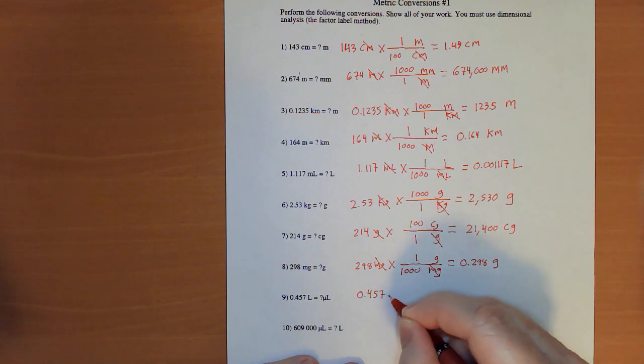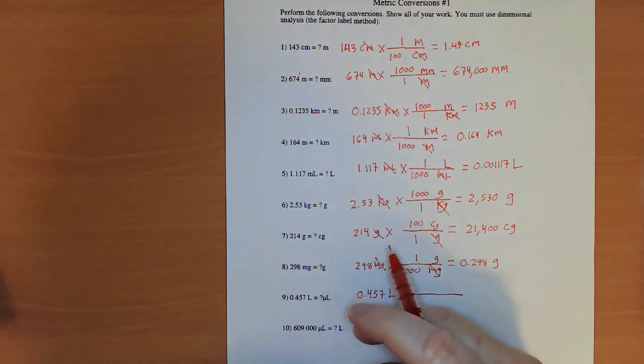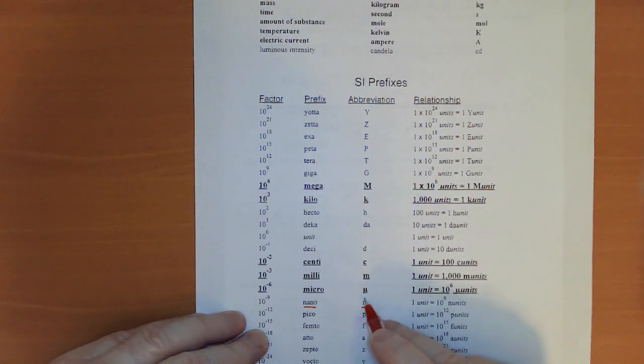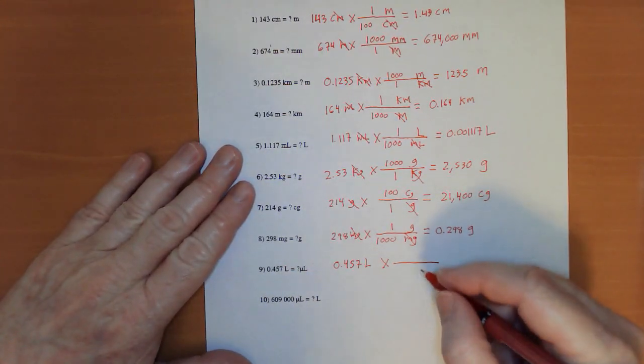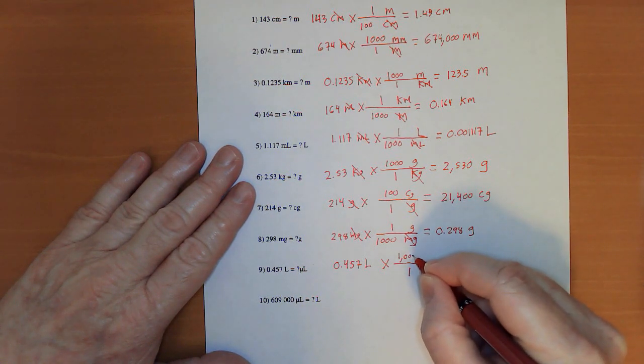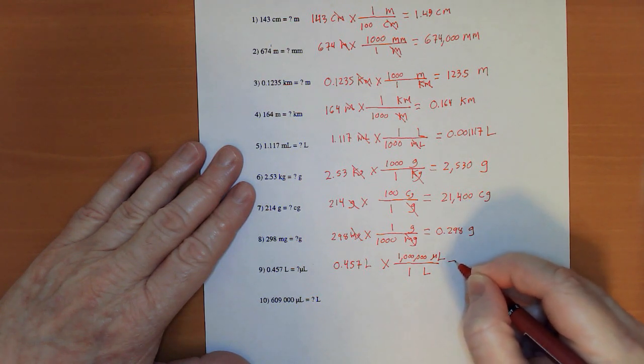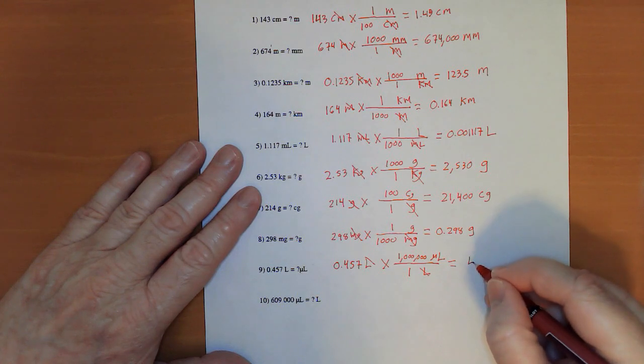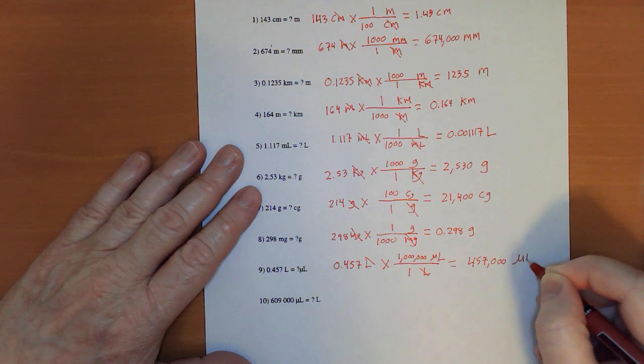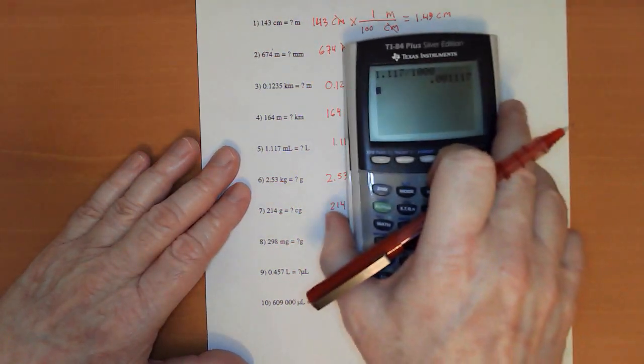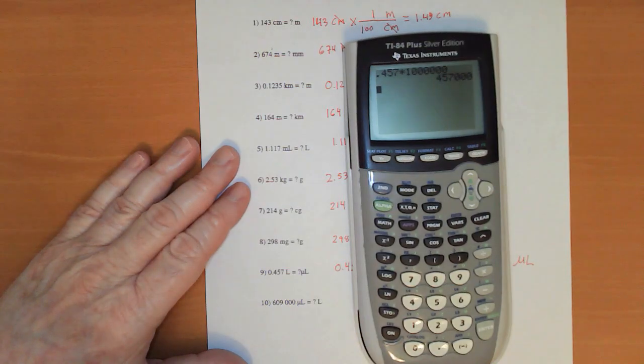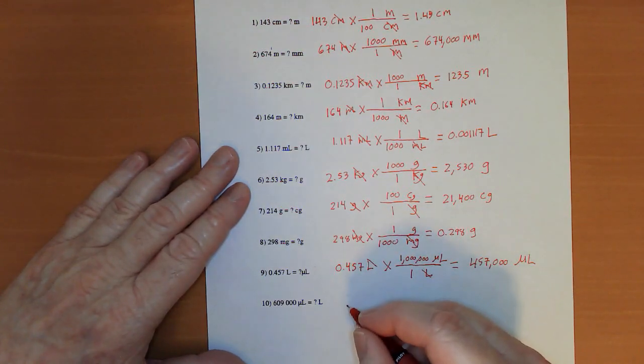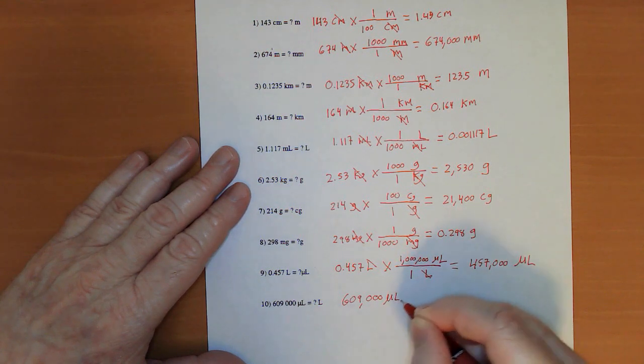0.457 liters. So, for the first time we're using micro here. We can look it up down there. That is the Greek letter mu. It kind of looks like that. 1 unit has 1,000,000 or 10 to the sixth micro units. So, 1 liter has 1,000,000 micro liters. Liters cancels and that's 457,000 micro liters when I multiply those together. In case that's something that's bothering you, let's take 0.457 times a million and we get 457,000.